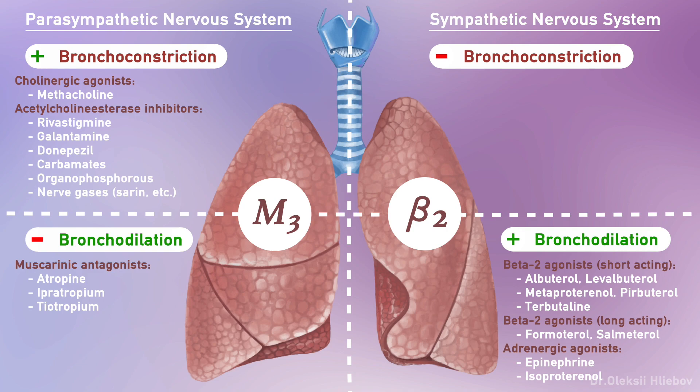Other medications like epinephrine and isoproterenol belong to adrenergic receptor agonists and may produce bronchodilation. Epinephrine acts on alpha-1, alpha-2, beta-1, and beta-2 receptors, and isoproterenol acts on beta-1 and beta-2 receptors.